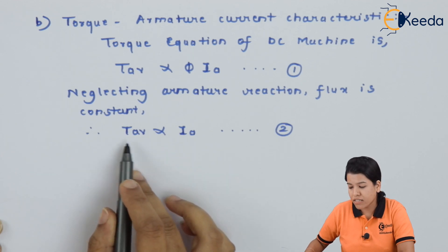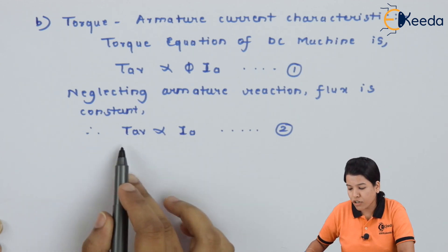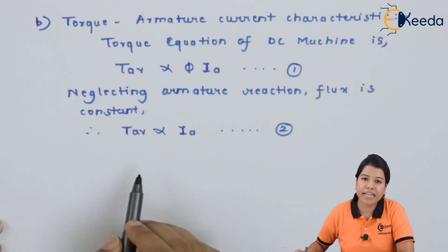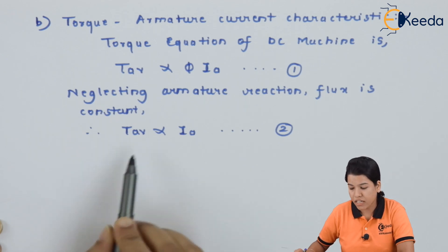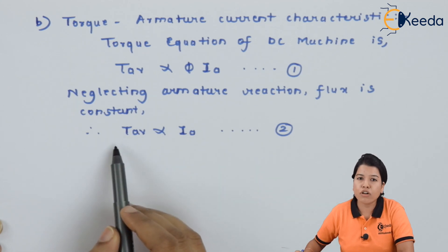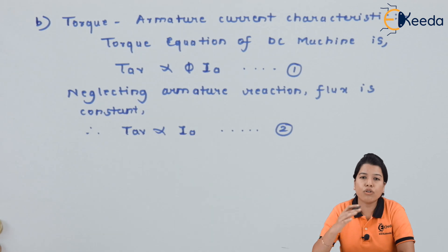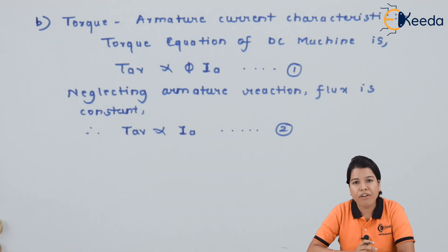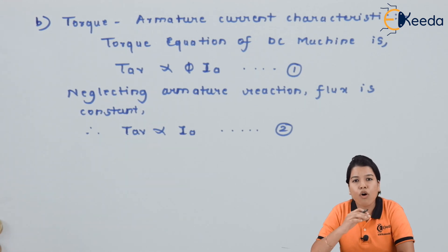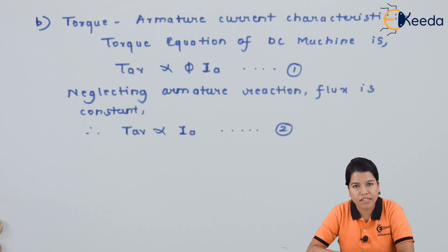As the armature current goes on increasing, the torque will also go on increasing. This happens only when we neglect the effect of armature reaction. At no-load condition, as armature current increases, torque also increases. But as the load goes on increasing, the effect of armature reaction cannot be neglected. Hence, there is a certain amount of flux change which impacts the torque value, and the torque will go on slightly decreasing.